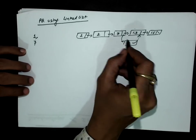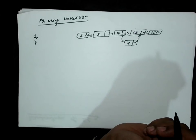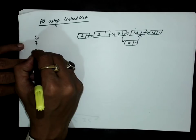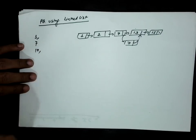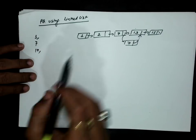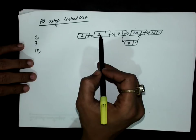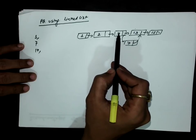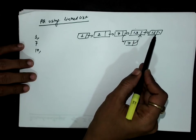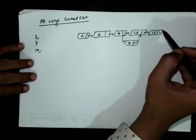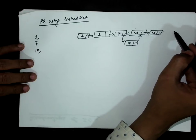Now suppose I have to insert 17. Since 17 is greater than all existing elements — greater than this, greater than this, greater than this, and so on — I will insert 17 after the last node.